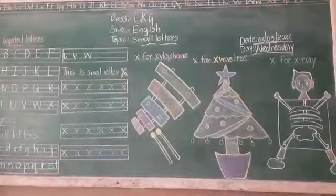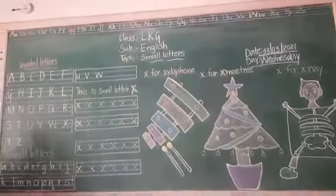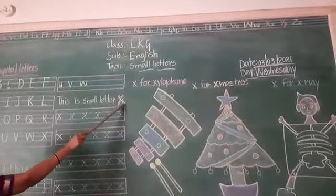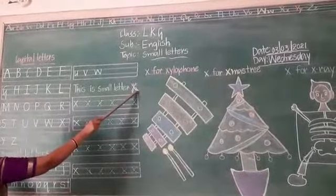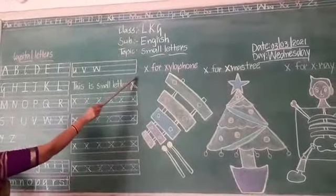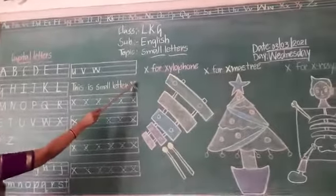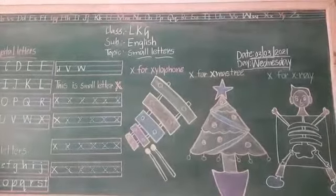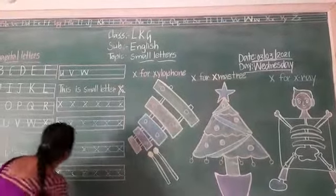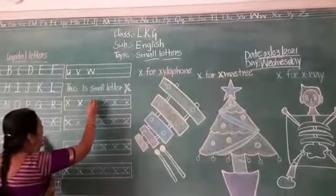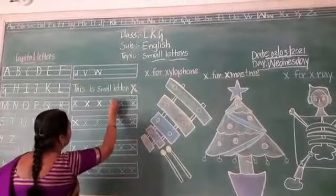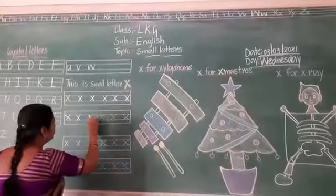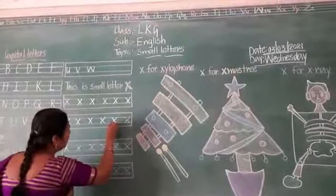Now, how to write small letter x in four lines. Start from the middle of the blue line and draw a standing line downwards to the right side, and go back to the middle of the blue line and draw another standing line towards the left side. This is small letter x, joining from blue line to blue line.